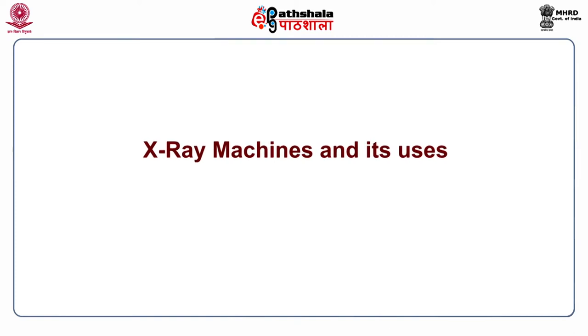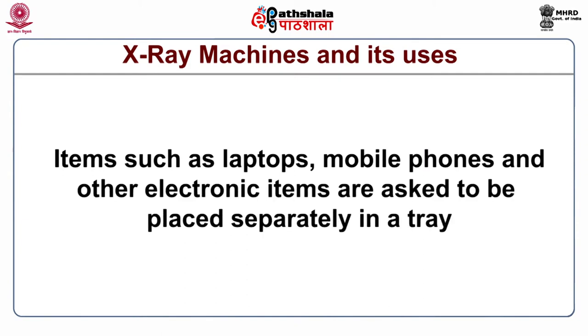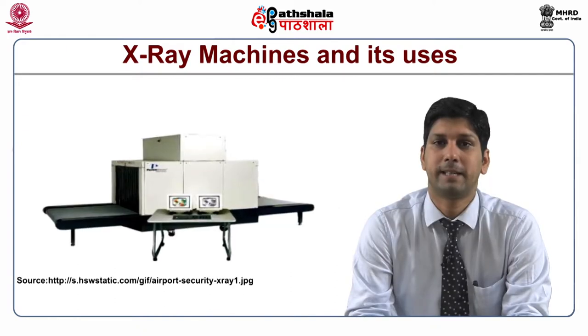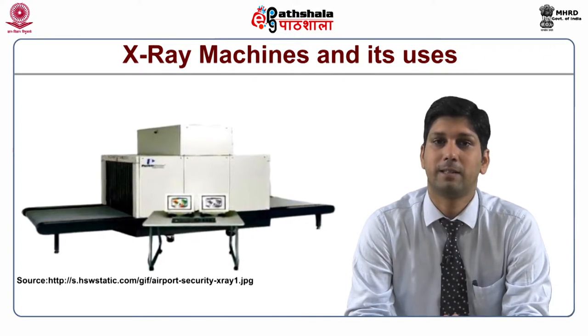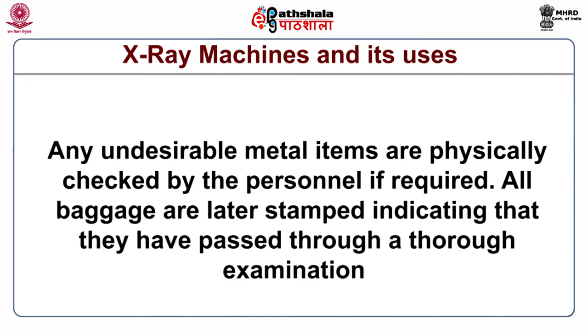X-ray machines and their uses: While passengers go through metal detectors, their baggage and belongings are passed through an X-ray machine on a conveyor belt, placed in a tray. Items such as laptops, mobile phones and other electronic items are asked to be placed separately in the tray. Since different materials absorb X-rays at different levels, the X-ray image on the monitor allows security personnel to see distinct items inside a passenger's bag. Items are typically shown in distinct colors based on the nature of the material — representing three main categories: organic, inorganic and metals. Any undesirable metal items are physically checked if required. All baggage are later stamped indicating they have passed through thorough examination.